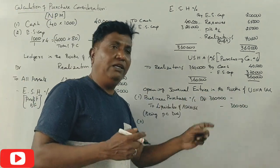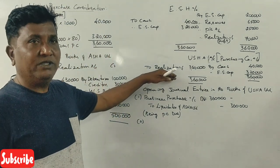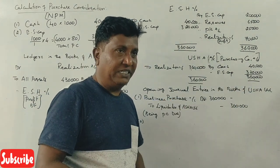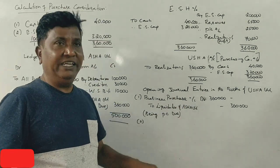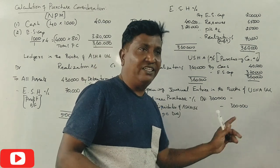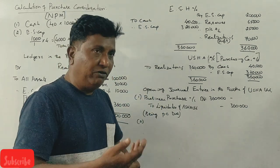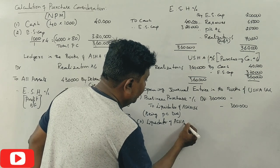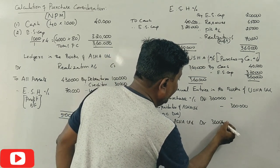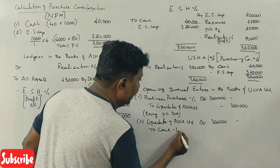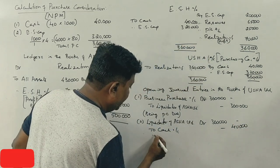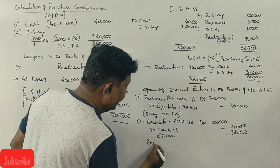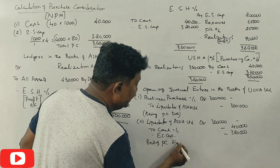How is Usha company paying Asha? The second journal entry is: Liquidator of Asha Account debit Rs.3,60,000. Credit: Cash Rs.40,000 and Equity Share Capital Rs.3,20,000. Narration: Being PC discharged or paid.